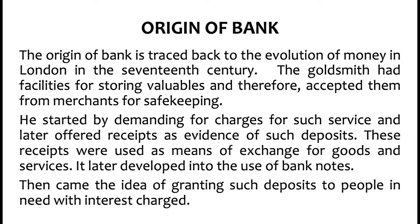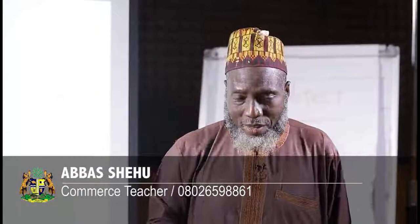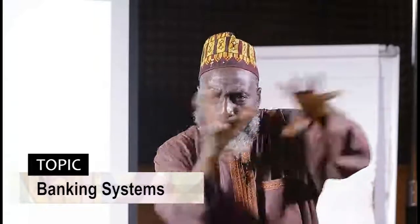Then came the idea of granting such deposits to people in need with interest charged. The goldsmiths came to realize that people were keeping their valuables with him, sometimes for a long period of time before collection. So he started to give out those valuables to people that were in need and started charging them interest. And that is why today in our modern banking system, you will see banks using deposits of other people to give out as loans to other people, charging interest. That is what was done in the 17th century in England through the goldsmiths.